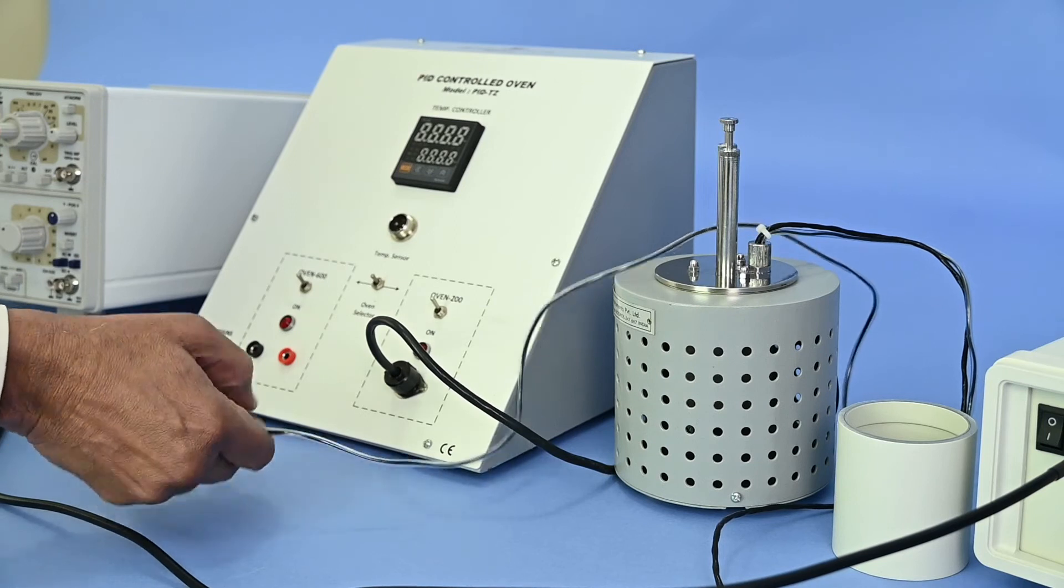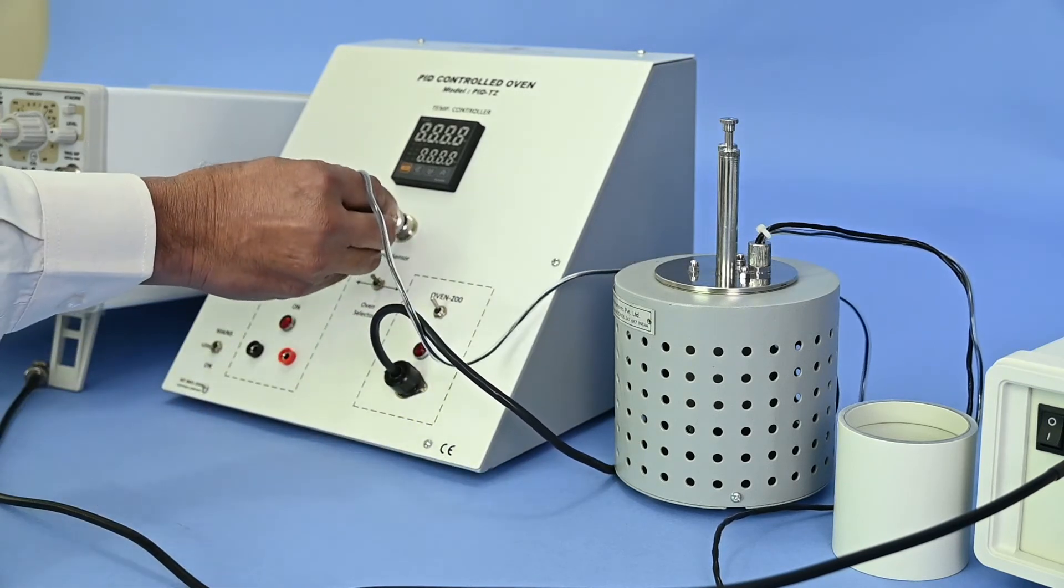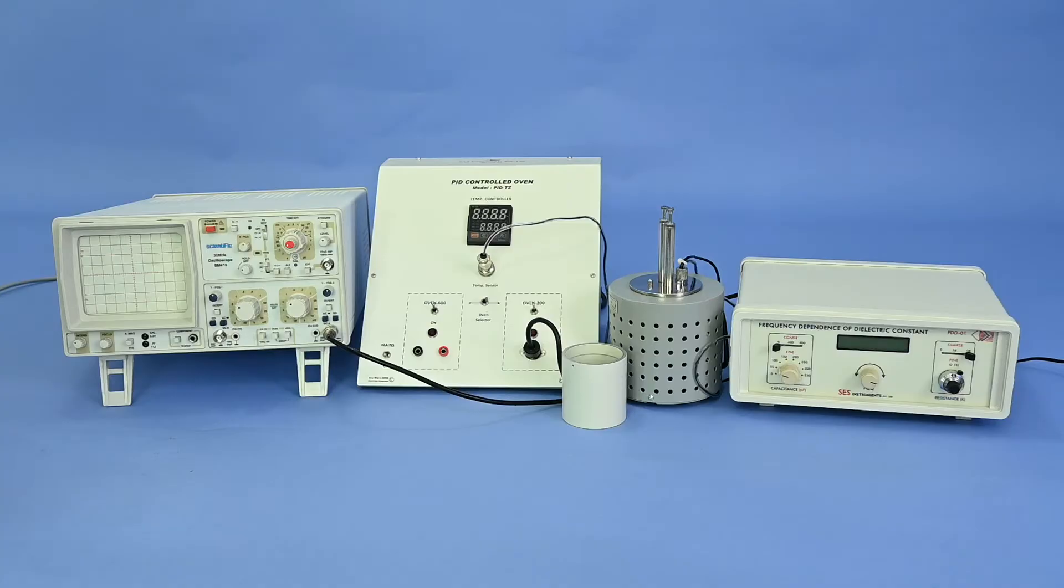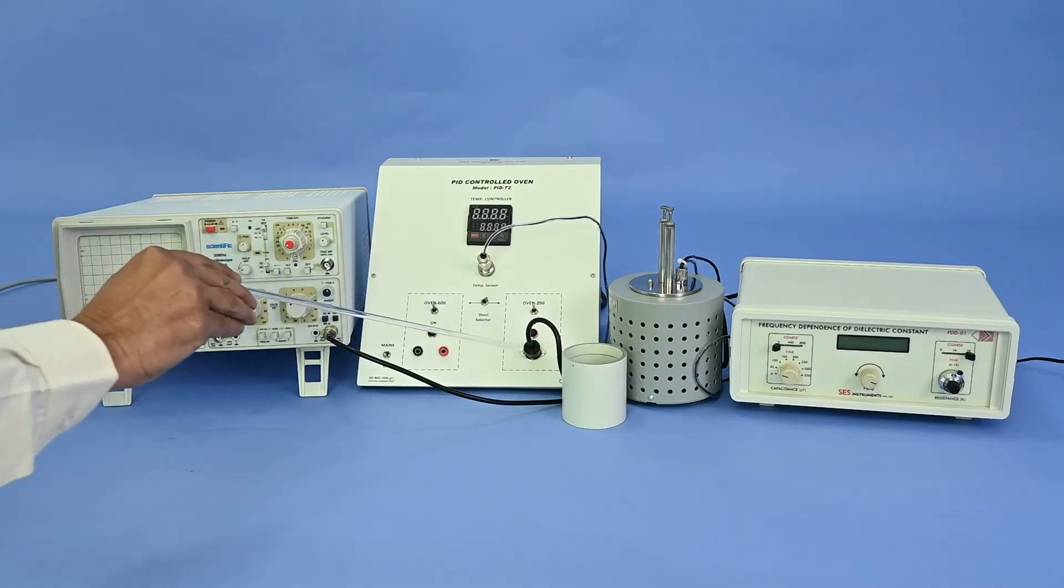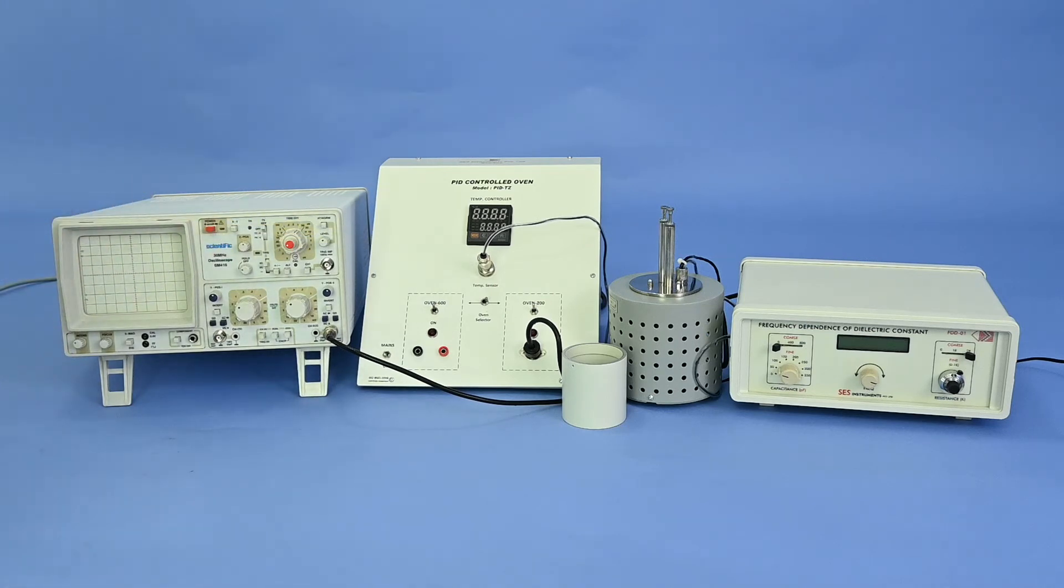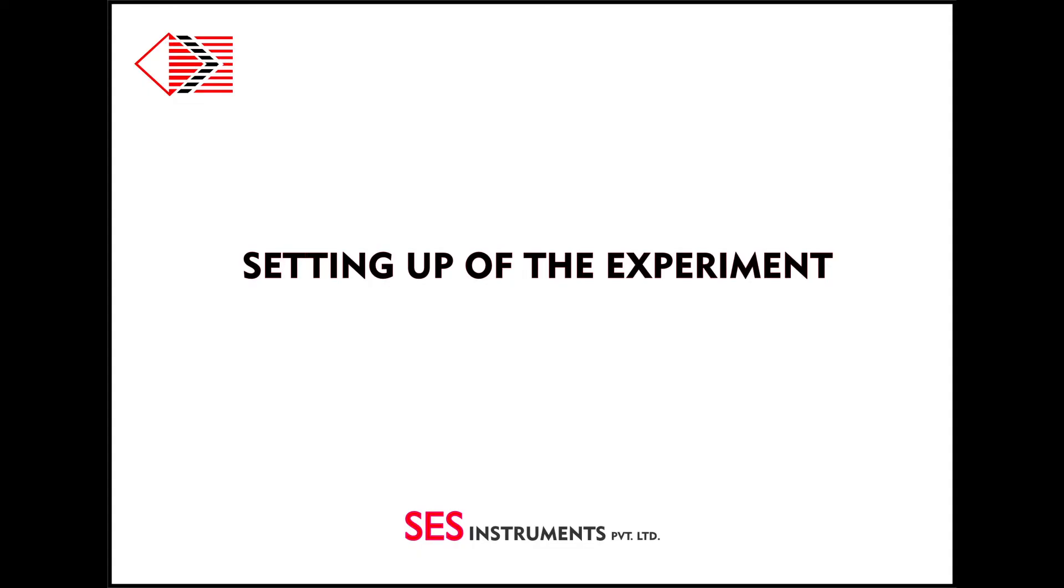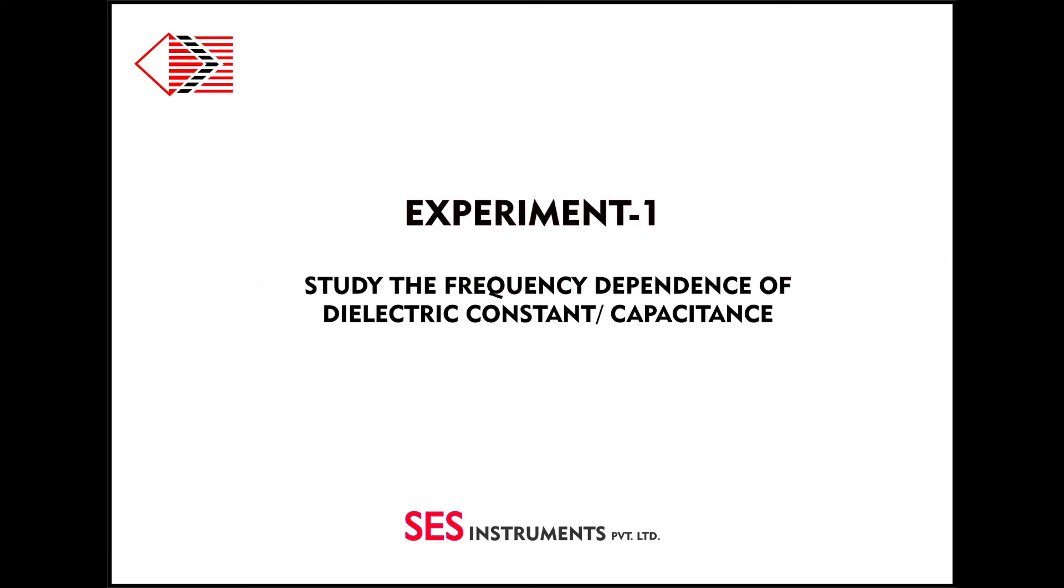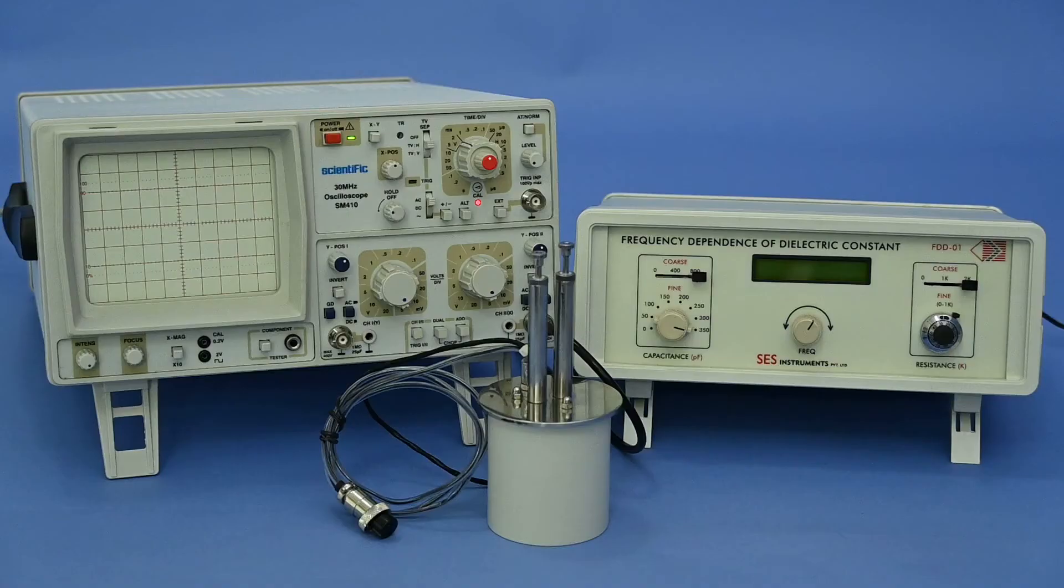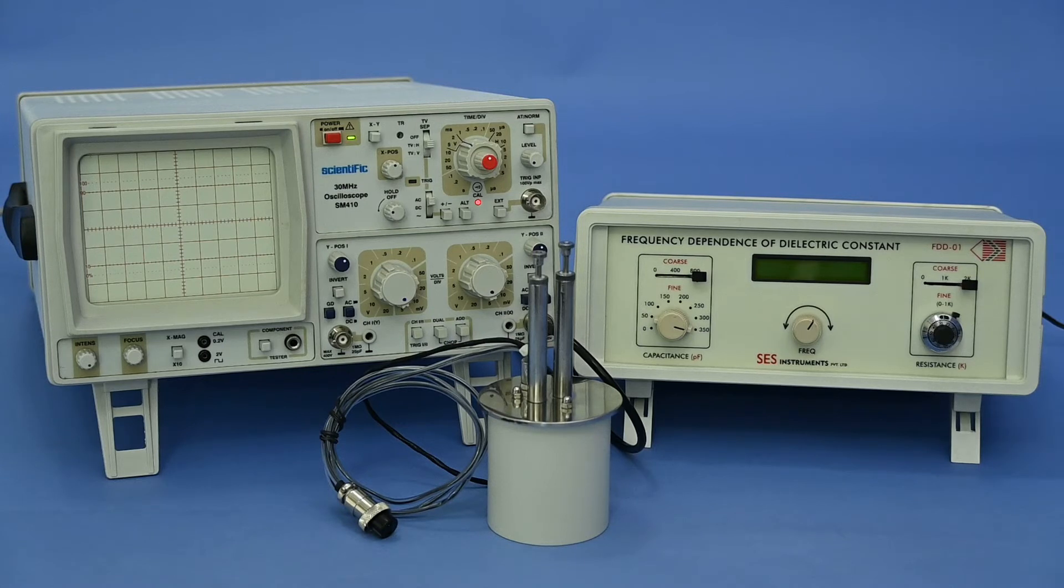Connect 3-pin oven connector to the PID unit socket. Next, 2-pin connector with PID unit. Last two connections are optional. It is only applicable when you have purchased PID-controlled unit with oven. Otherwise, 2-pin temperature connector of this arrangement will remain unconnected to any socket.